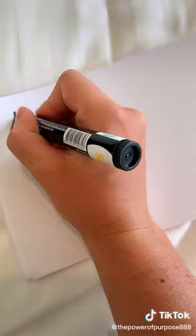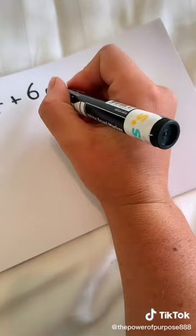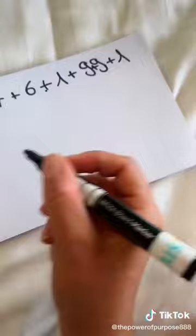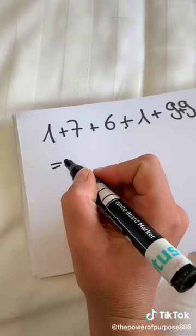Your life path number is super simple. You simply add all the numbers of your birthday together. So I'm born June 17th, 1991, so you add them all together and this equals one number which is 34.